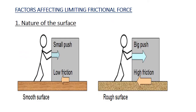Now let us consider the factors affecting limiting frictional force. The first factor is the nature of the surface. Look at this picture — first instance, smooth surface; second instance, rough surface. On a smooth surface, we can easily push any object, but on a rough surface, we must give more force. On a smooth surface, low friction acts on the object, but on a rough surface, high friction acts. So the nature of the surface is one factor which affects limiting frictional force.